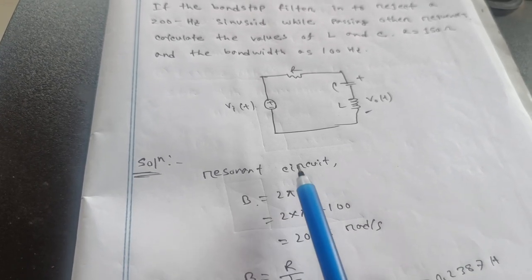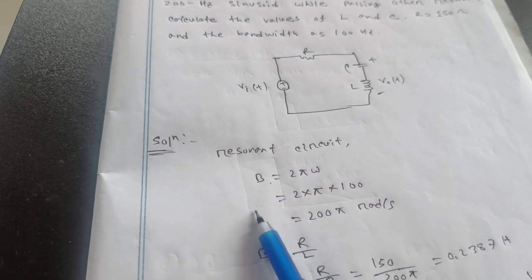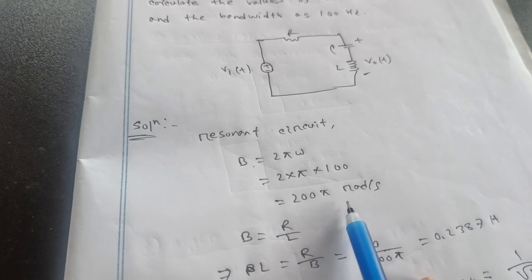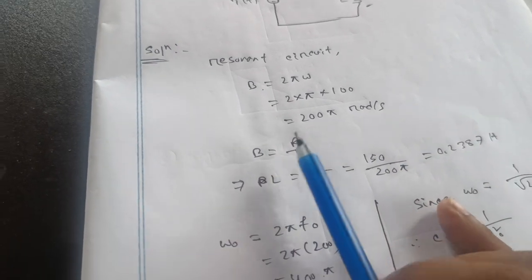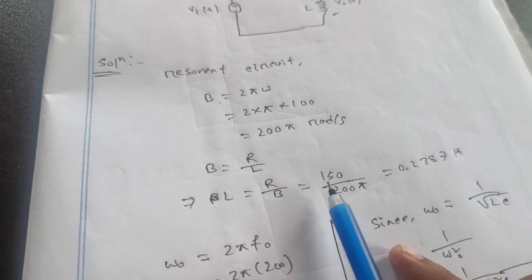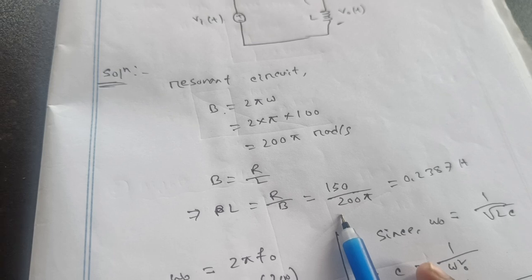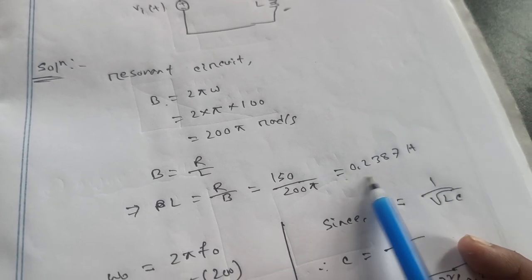Omega we know 100. 100 is omega. That means twice pi omega B. B is there twice pi as radians per second. B equals R by L. That means L equals R by B. R, that means value 150 and B equals 200 pi. That means 0.2387 hertz.